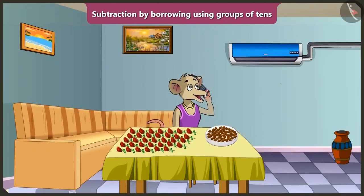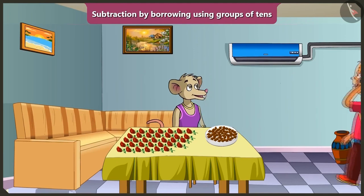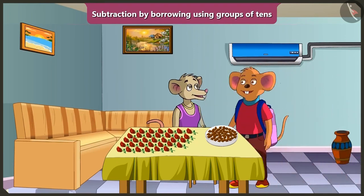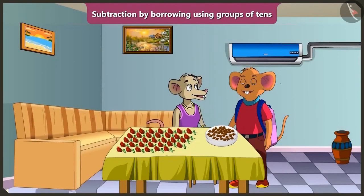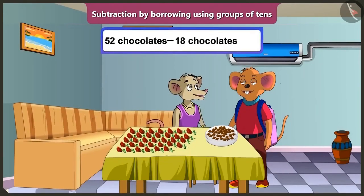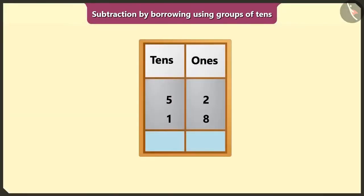Oh, Choo-Choo, when are you coming? I have come. Your house is very beautiful. Thank you, Choo-Choo. Would you like to eat chocolate? Mmm, yummy. We ate 18 chocolates out of 52. So, now how many chocolates are left? Let's do subtraction after writing 52 and 18 in the box of ones and tens. You had 52 chocolates — that means 5 tens and 2 ones. We ate 18, which means 1 ten and 8 ones.